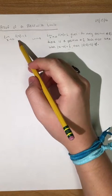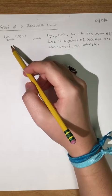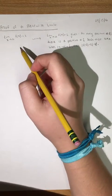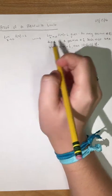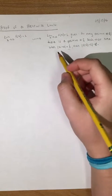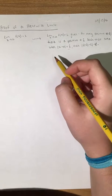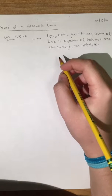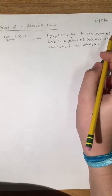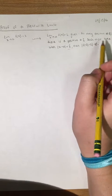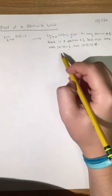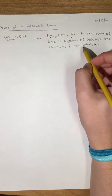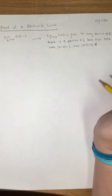Originally the definition of a limit stated that the limit of f of x as x approaches a is l, but there were some issues with this definition because it wasn't specific enough. So this new definition was formed, which says that we will write the limit as x approaches a of f of x equals l, given that for every positive number epsilon, there is a positive number delta such that x will not equal a when the absolute value of x minus a is less than delta, then the absolute value of f of x minus l is less than epsilon.